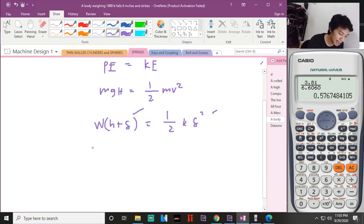So that is 1000 times the height of fall, that is six inches, plus this deflection, equal to one half of k, that is 2000, times the deflection. Not eight - deflection.